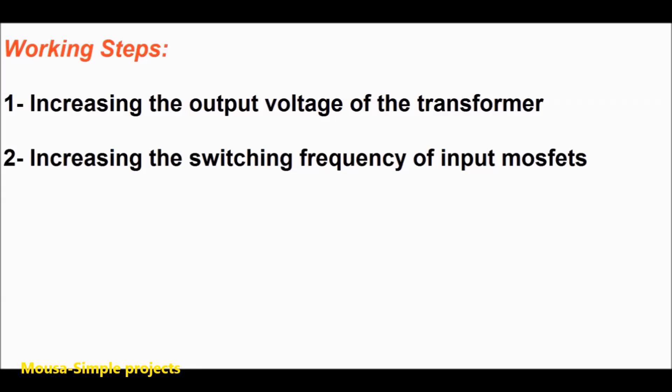So there are five steps to convert any modified or square wave inverter to pure sine wave. Step number one is increasing the output voltage of the transformer. Step number two is increasing the frequency of output MOSFET switching.